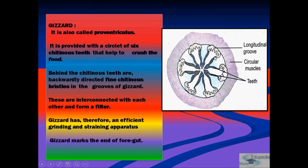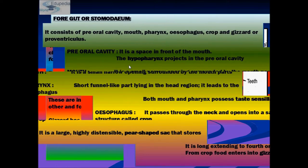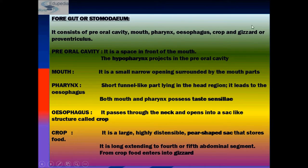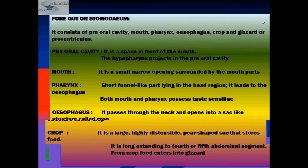Behind the six chitinous teeth are backwardly directed fine chitinous bristles in the groove of the gizzard. These are arranged in longitudinal grooves and interconnected to form a filter. The gizzard therefore has an efficient grinding apparatus and marks the end of the foregut.